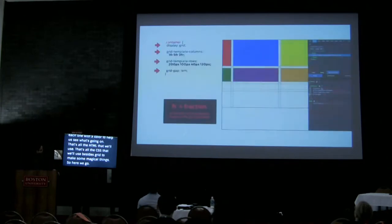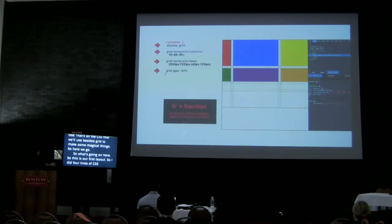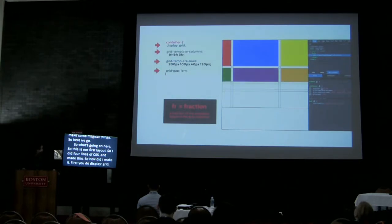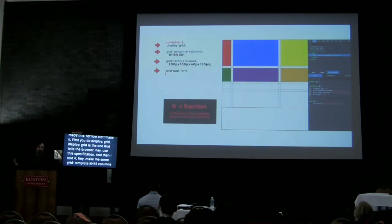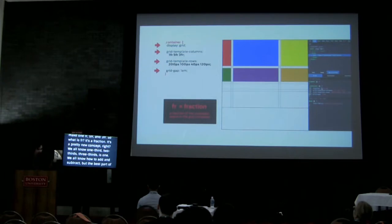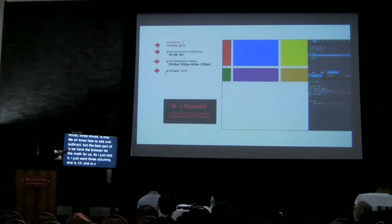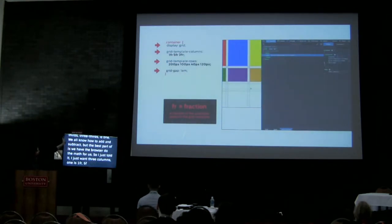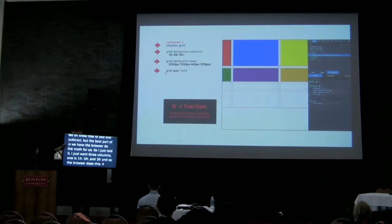This is our first layout — made with four lines of CSS. First, you do display:grid, which tells the browser to use this specification. Then I told it to make three columns: one fr, five fr, and three fr. What is fr? It's a fraction — a new concept, but we all know fractions. The best part is that we have the browser do the math for us. I just said I want three columns, one is 1fr, five fr, three fr — you do the math. The browser always keeps the fractions: it knows it's one-ninth, five-ninths, and three-ninths, because they all add up to nine.